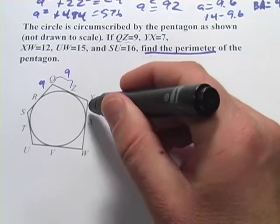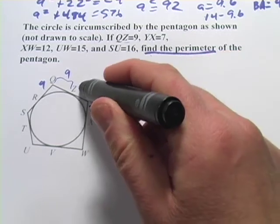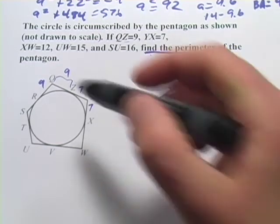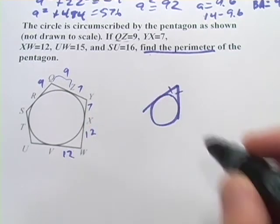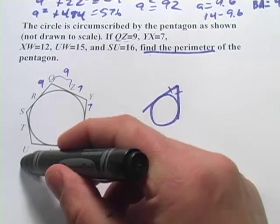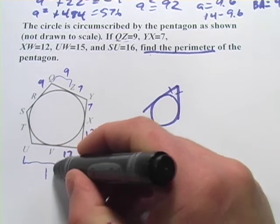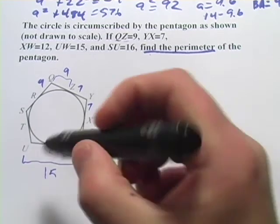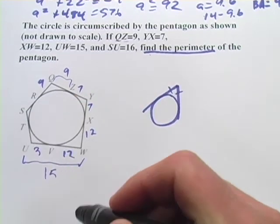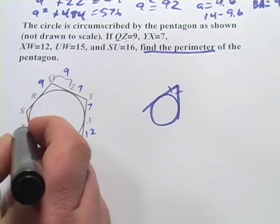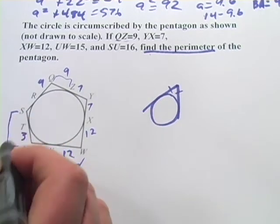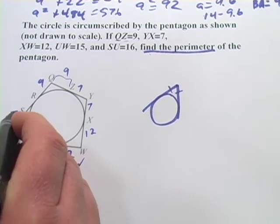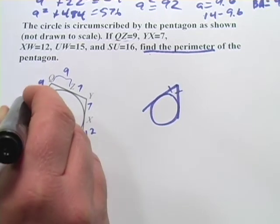It says YX is 7. So that's this side. So it would be the same as this side. So ZY is 7. XW is 12. So I'd have 12 here and 12 here. UW, okay so that's this whole length is 15. So I can subtract here and get 3, so 15 minus the 12 here I got 3. That means TU is 3 as well. And then it says SU is 16. So I'll do my subtraction trick again and I'll get 13 here which means this side is 13.